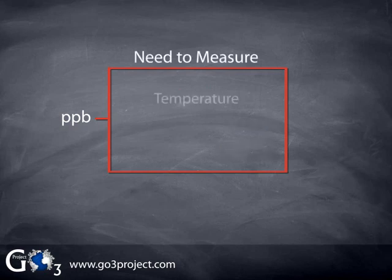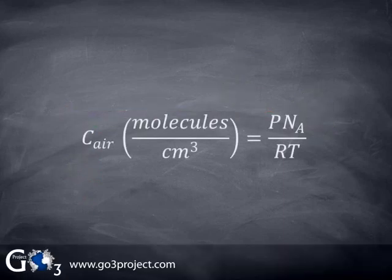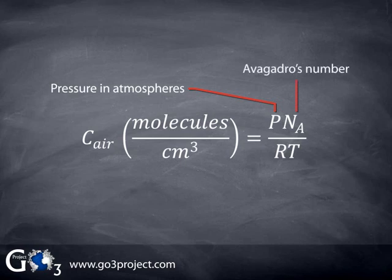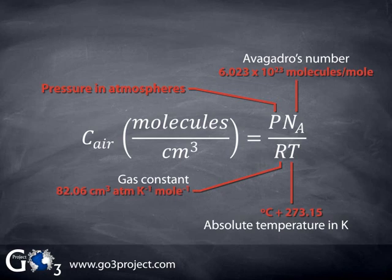The concentration of air molecules is completely determined by the temperature and pressure. So, to convert our ozone measurement from concentration units of molecules per centimeter cubed to mixing ratio in PPB, we need to measure the temperature and pressure inside the detection cell. This is done by adding temperature and pressure sensors to the ozone monitor. We can calculate the concentration of air molecules inside the detection cell using the ideal gas law. Here, P is the pressure in atmospheres, N sub A is Avogadro's number, R is the gas constant, and T is the absolute temperature in Kelvin. Avogadro's number and the gas constant are accurately known constants. We only need to measure P in atmospheres and T in Kelvin to calculate the concentration of air molecules. If we measure T in Celsius, we can convert it to Kelvin by adding 273.15.